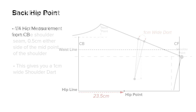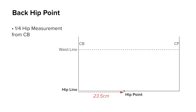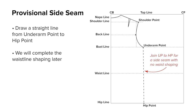The back hip point. Measure across from center back along the hip line a quarter of the hip measurement and label it back hip point. The provisional side seam. Join the back underarm point to the back hip point with a straight guide line. We will complete the waistline shaping later.